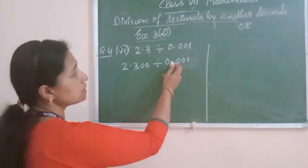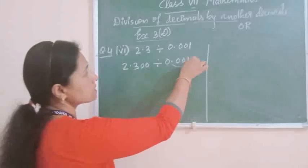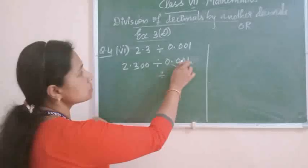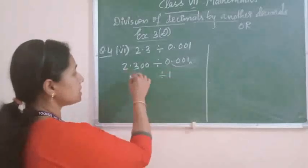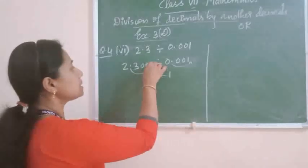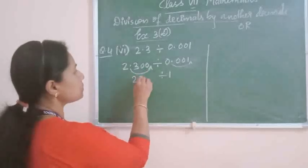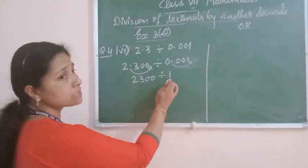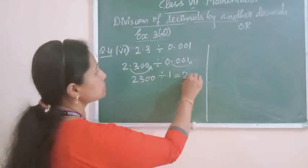Now you can change the divisor into a natural number. For changing this divisor into a natural number, you have to shift the point to the right side by 3 places — 1, 2, 3. So 0.001 becomes 1 only. And the same way from the dividend also, you have to shift the point to the right by 3 places — 1, 2, 3. So 2.300 becomes 2,300. We changed both the dividend and the divisor. 2,300 divided by 1 is equal to 2,300.